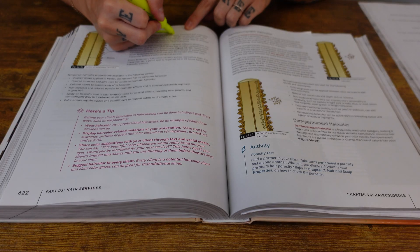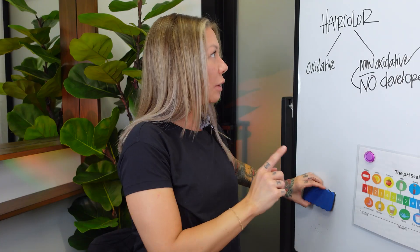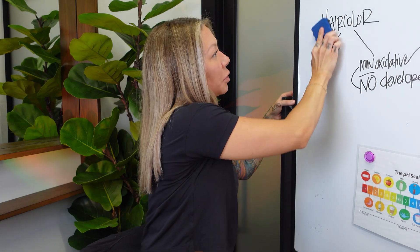At the top of page 622 we're going to go to temporary hair colors. Temporary hair colors don't use a developer, so again that means they are non-oxidative. Whatever's in the tube you don't need to mix it with anything — you pour it out, spray it on, color it on, paint it on.